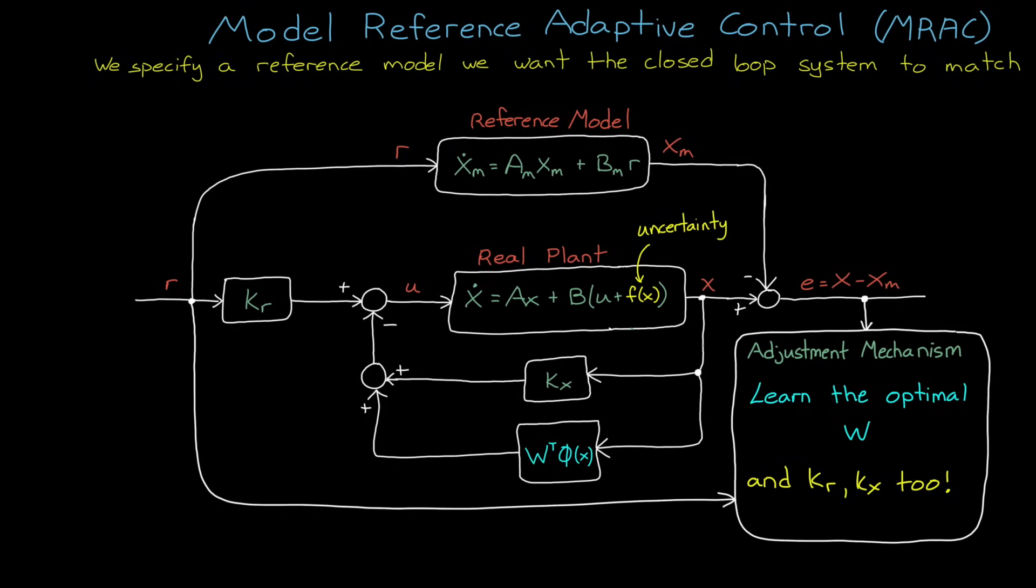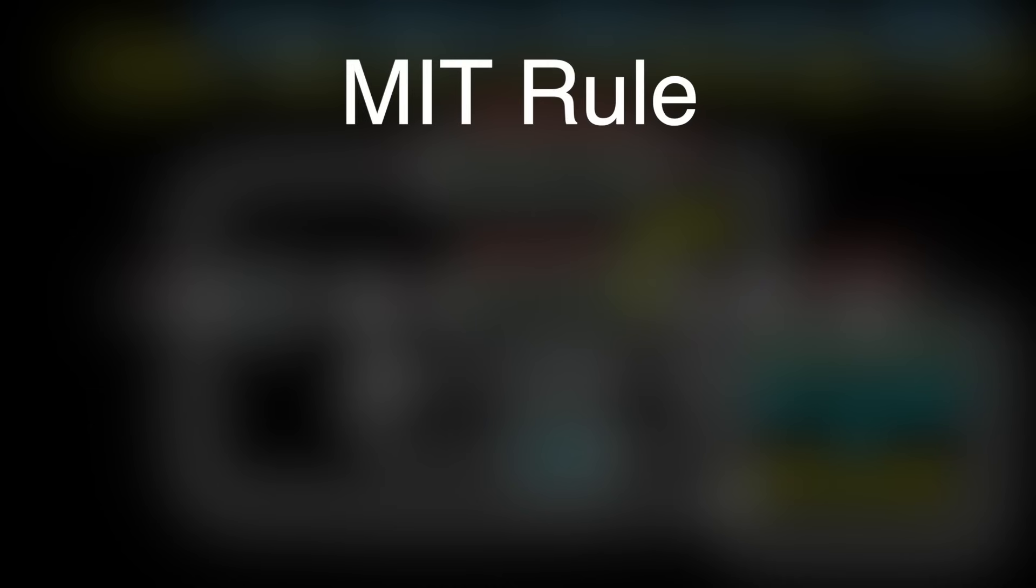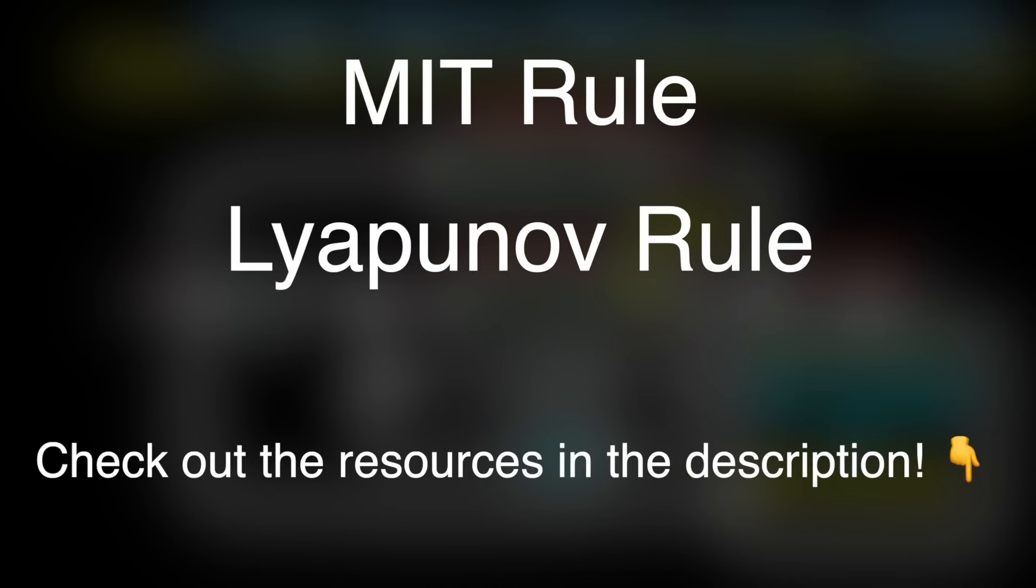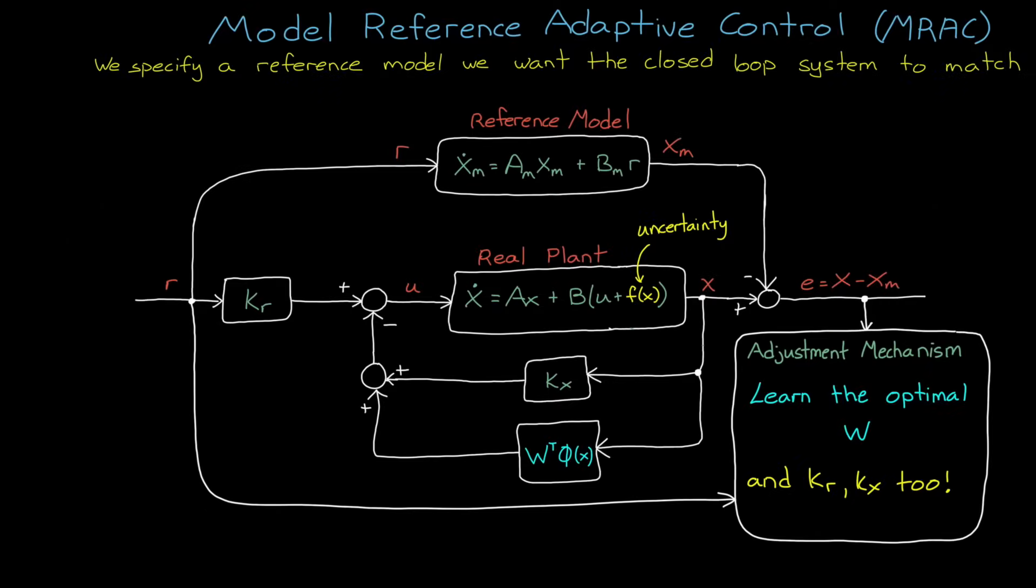And at this point, the obvious question is how do these algorithms do that? And unfortunately, the math would take a video on its own to describe. But fortunately, other people have already created those videos. So if you want to learn about the MIT rule or the Lyapunov rule for learning these parameters, I suggest you check out the great resources that I've listed in the description of this video. And hopefully, with this brief overview of the control law and the block diagram, you'll have a better appreciation for what MRAC is trying to do.